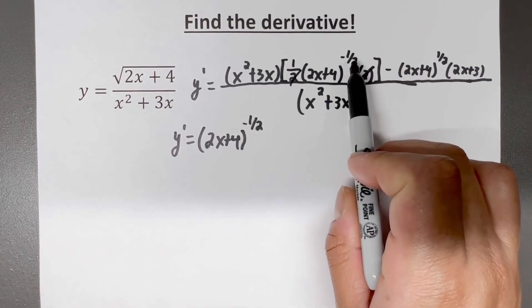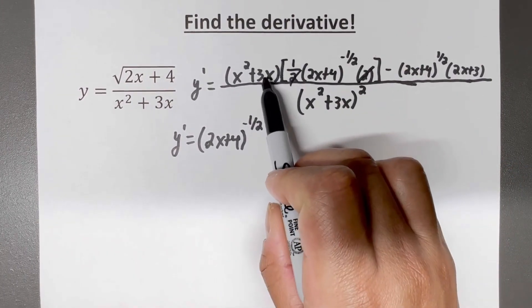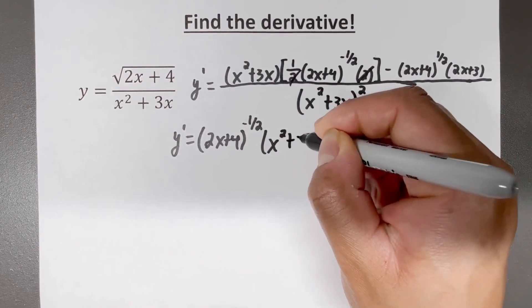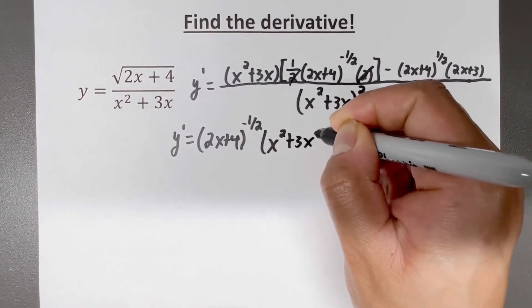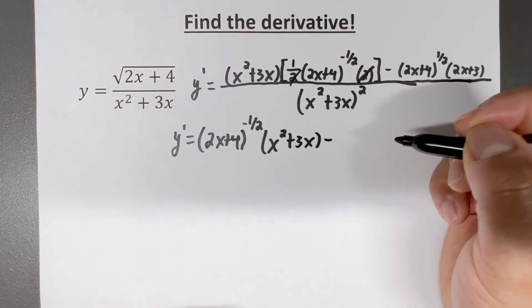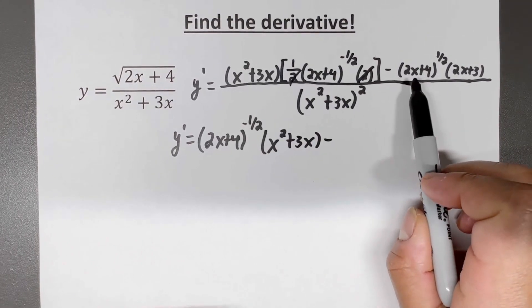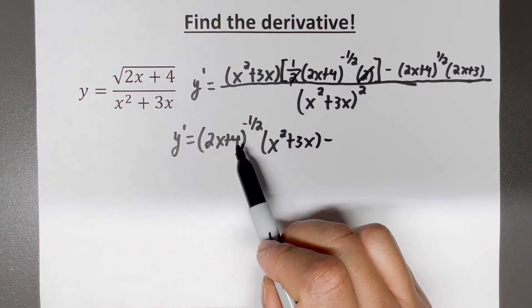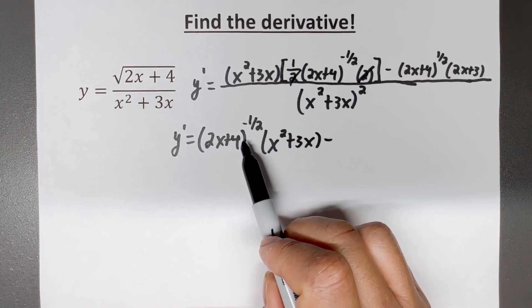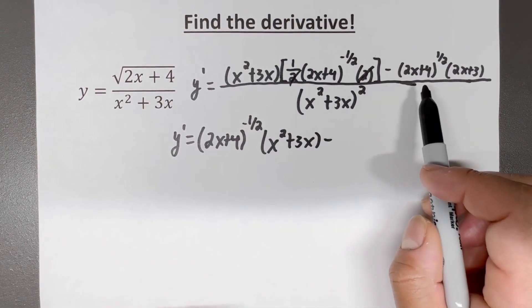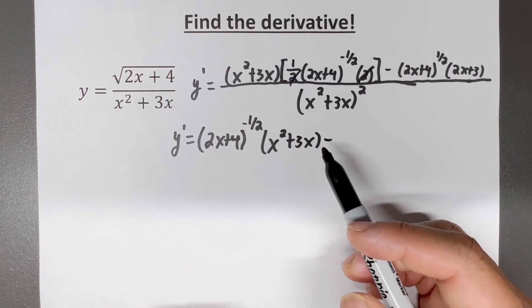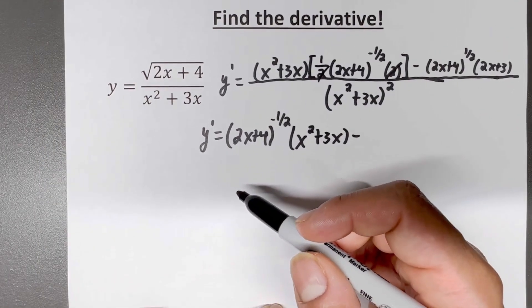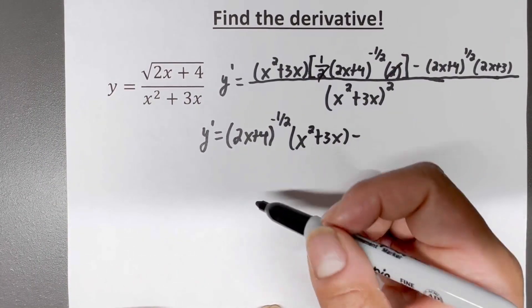Well, that means I pulled out this whole thing. The only thing left there was it being multiplied by x squared plus 3x. Now here's the tricky part: I have 2x plus 4 raised to the one half, but I factored out the negative one half. What would be left over? That's the question. So what we're going to do is off to the side, talk about what we just did.